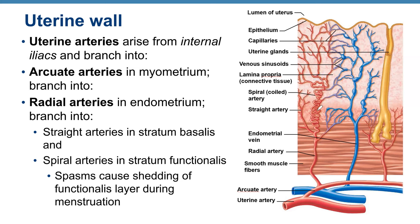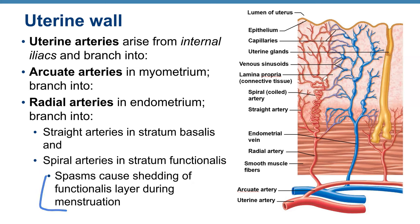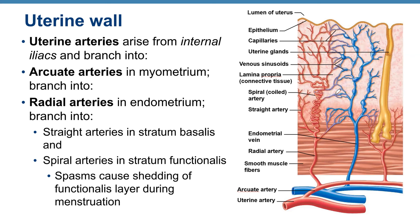Just before menstruation, the spiral arteries spasm. This causes shedding of the stratum functionalis layer during menstruation — the spasming arteries cut off blood delivery to the tissue, the tissue dies, and it is shed during menstruation.